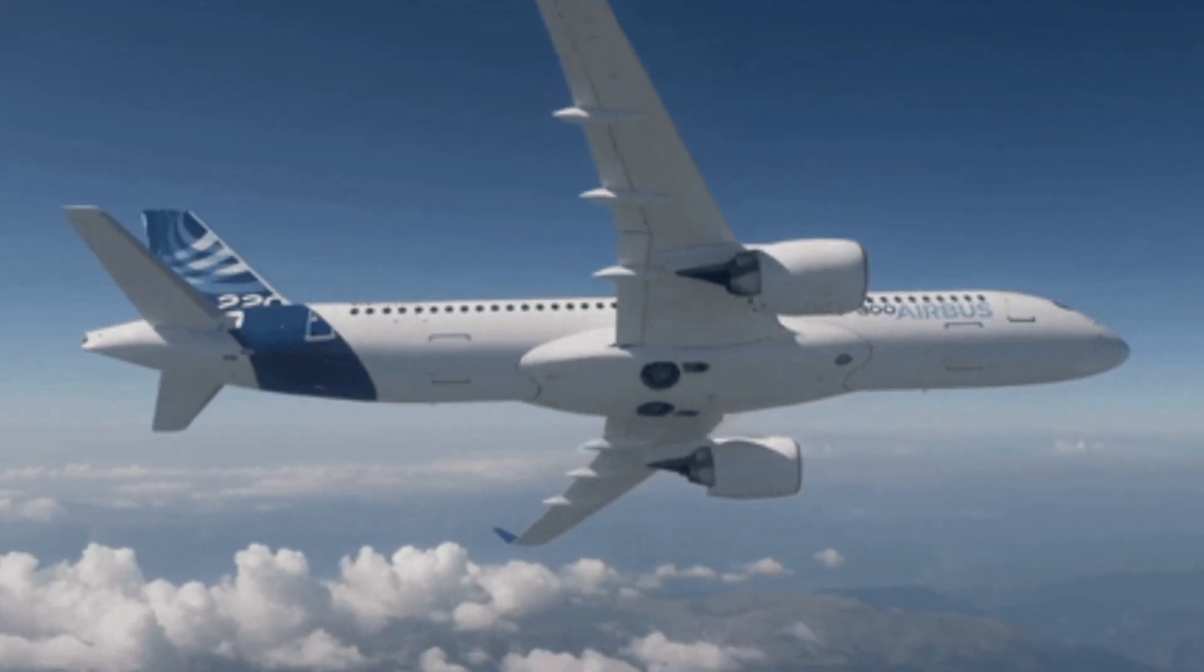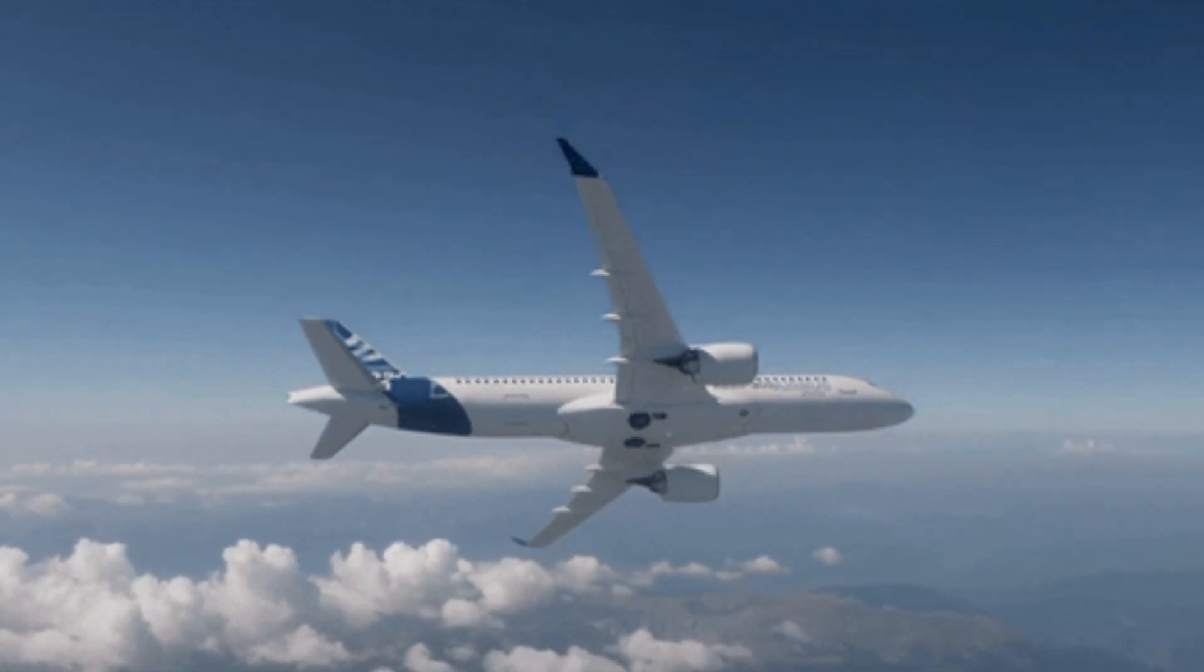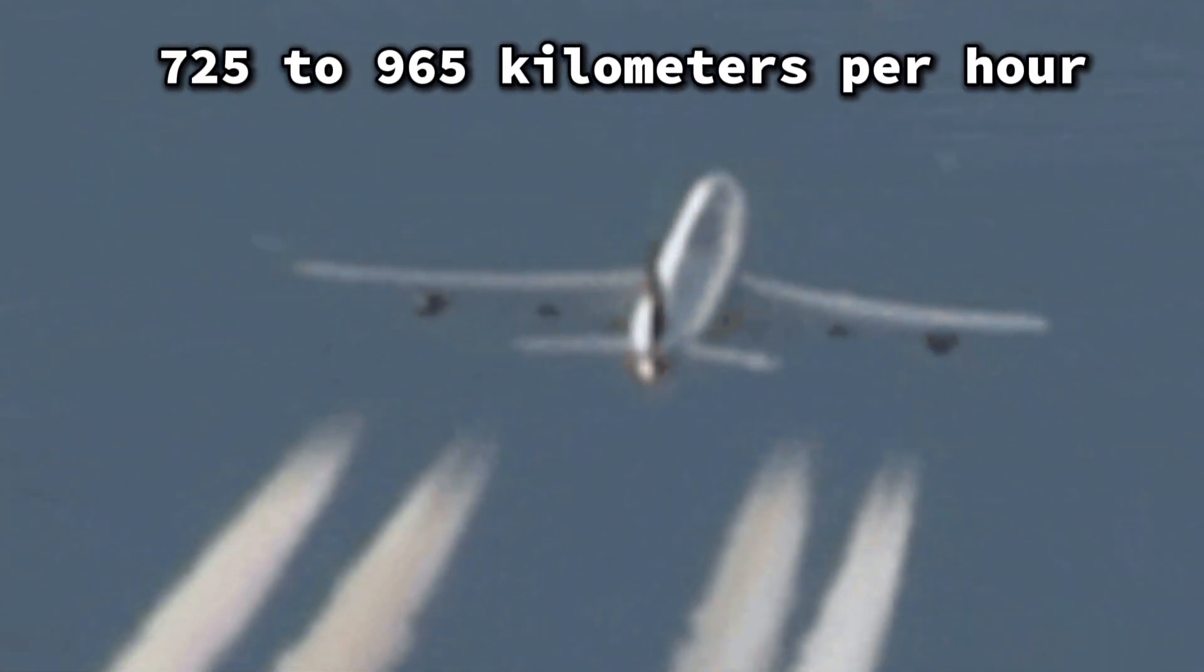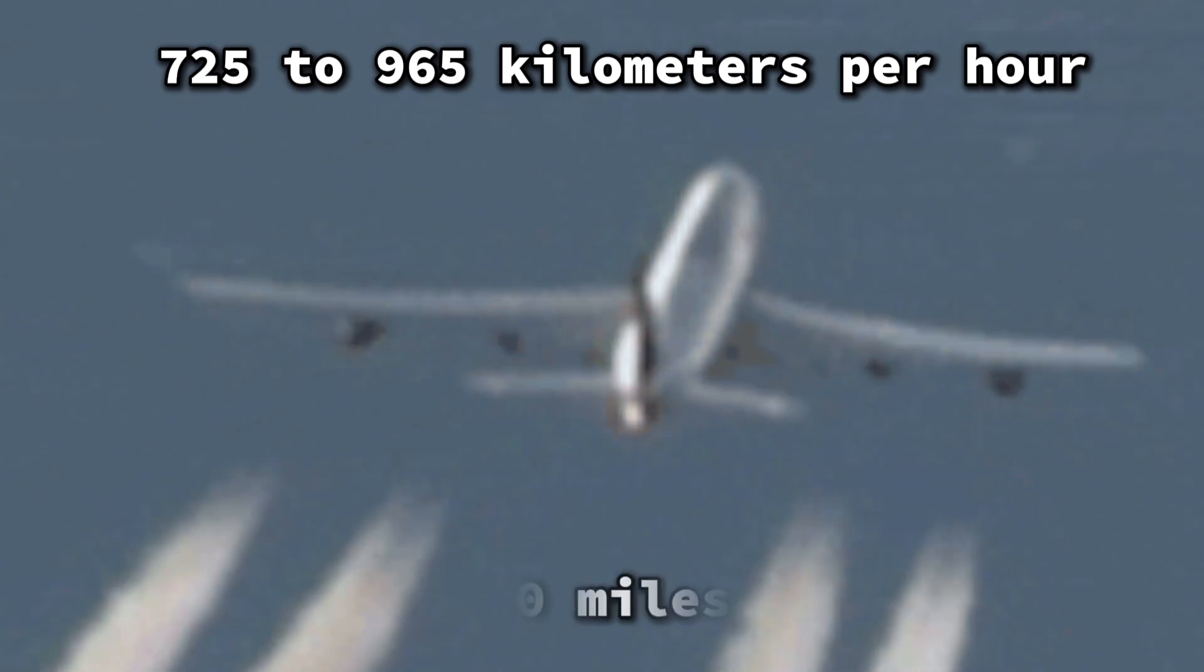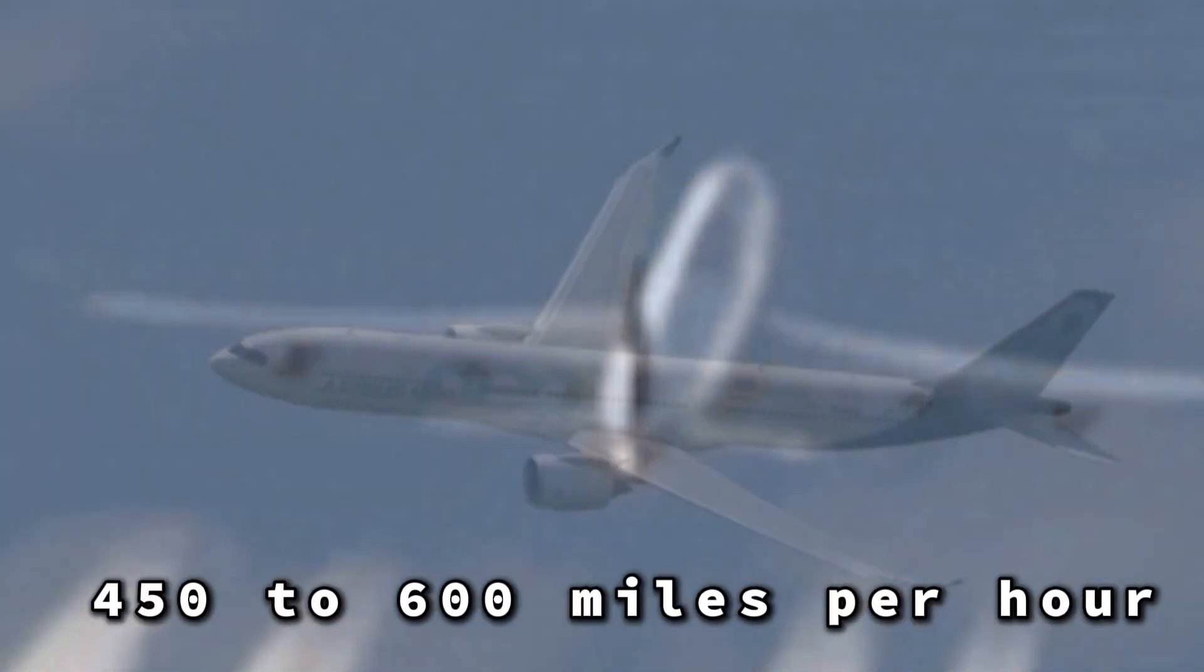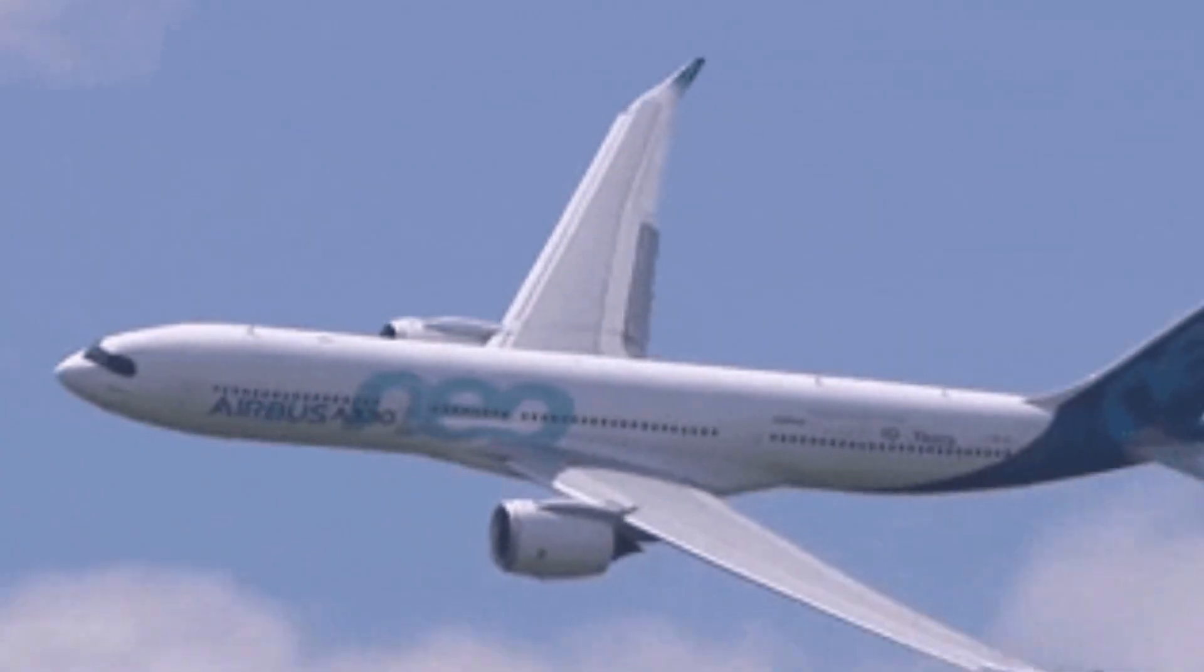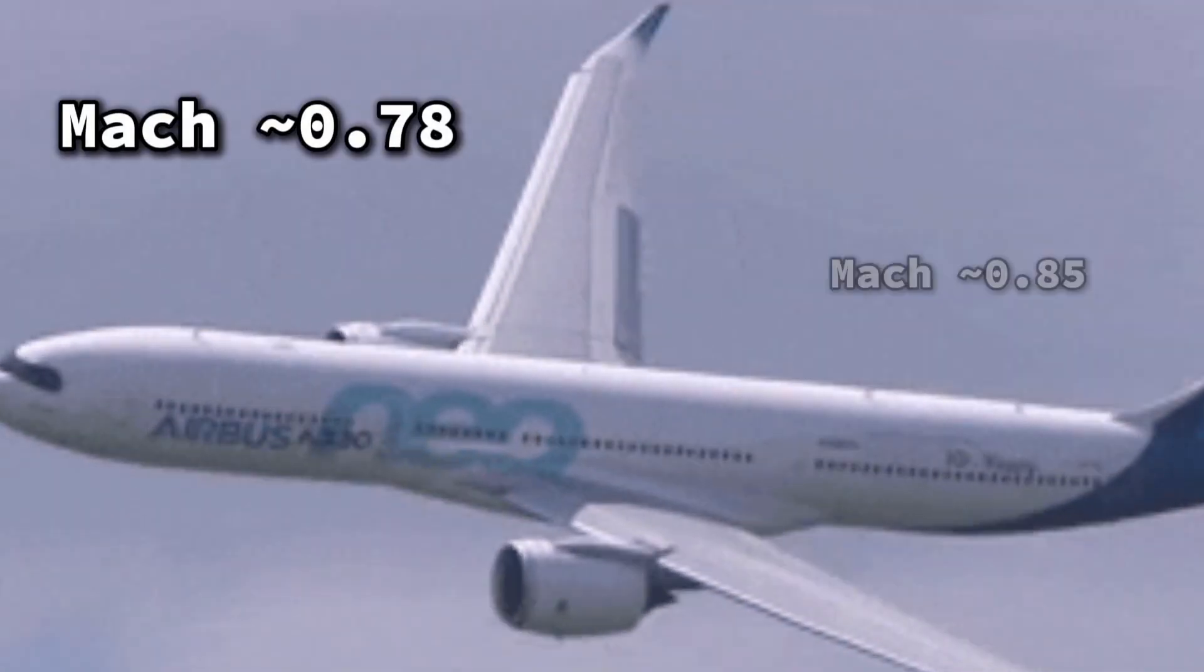For perspective, traditional commercial jets typically cruise at speeds ranging from 725 to 965 kilometers per hour, or 450 to 600 miles per hour. In terms of Mach number, these jets usually cruise at Mach 0.78 to Mach 0.85.